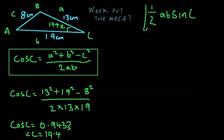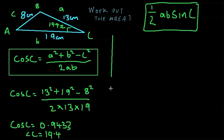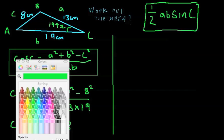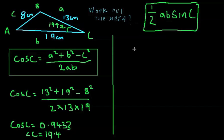Now we can apply the half AB sine C rule to get the area of the triangle. So let me just quickly change pen here. So we know half AB sine C, so let's just go straight into it.